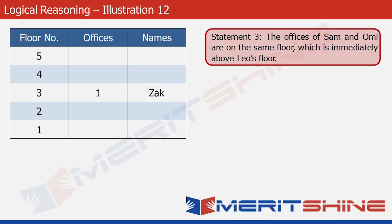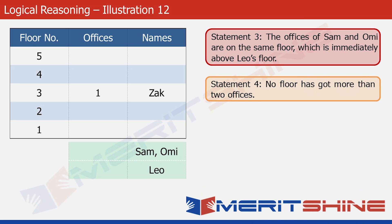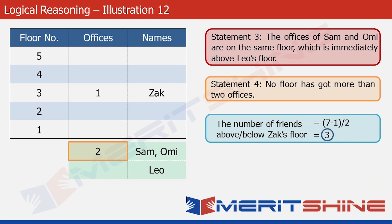Let's look at statement 3 now. It says that the offices of Sam and Omi are on the same floor and that floor is immediately above Leo's floor. Since no floor has more than two offices, the floor with Sam and Omi has exactly two offices. And since Zach's friends must appear in groups of three, Leo's floor has to have only one office. So we have one block: Sam and Omi on one floor, and Leo on the floor just below theirs.